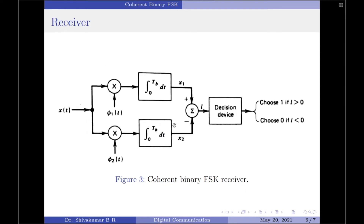Let us now move on to the receiver. Since we have two orthonormal basis functions at the transmitter, the receiver will have two paths, each path having a correlator — that is, a multiplier followed by an integrator.